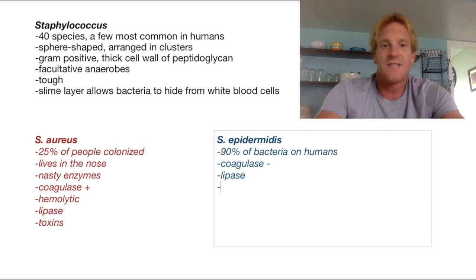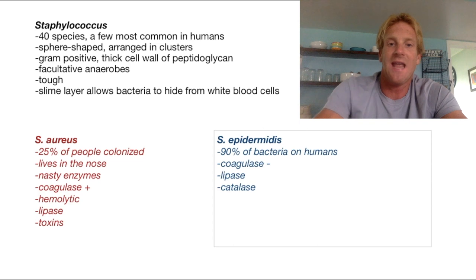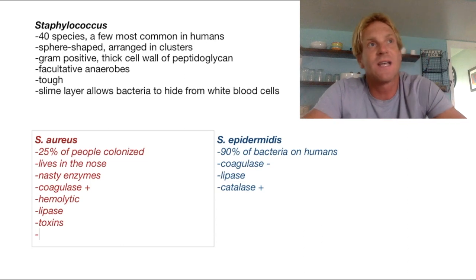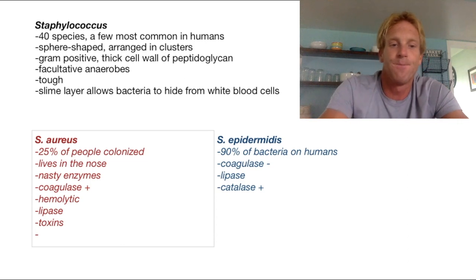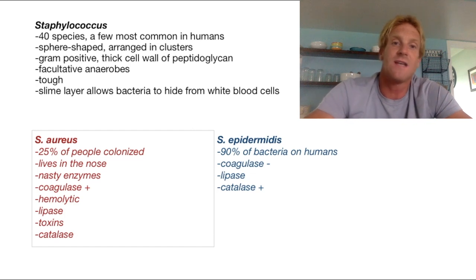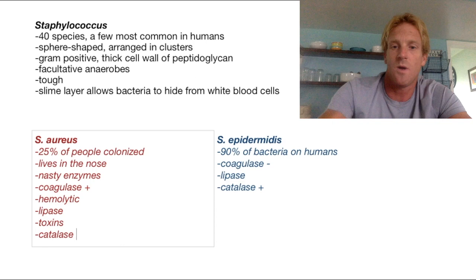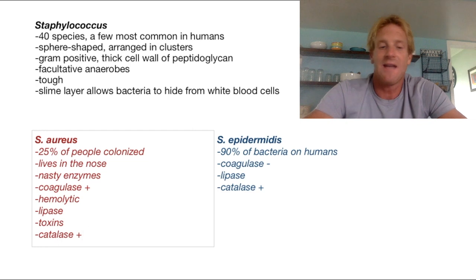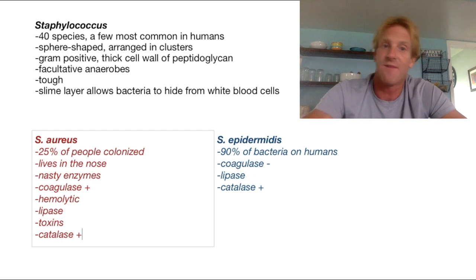Both Staph epidermidis and Staph aureus are catalase positive. Catalase is an enzyme that reacts with hydrogen peroxide and breaks it into water and oxygen. So if you put hydrogen peroxide on these Staph bacteria, it will react with the catalase, creating a violent chemical reaction which kills the bacteria — that's why it bubbles up. The catalase test is a really nice way to differentiate a Staphylococcus bacteria, either Staph aureus or Staph epidermidis, from other bacteria that lack catalase.